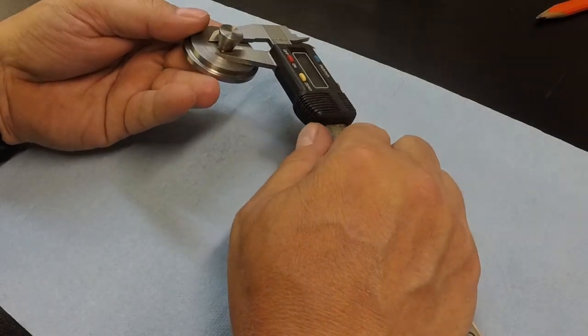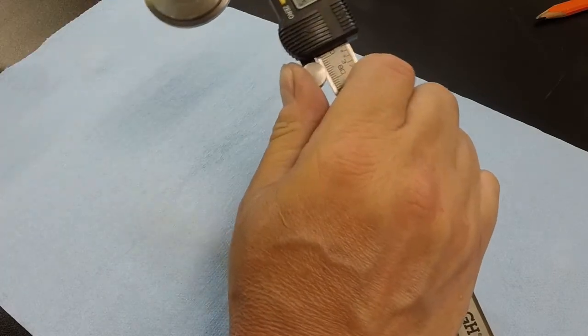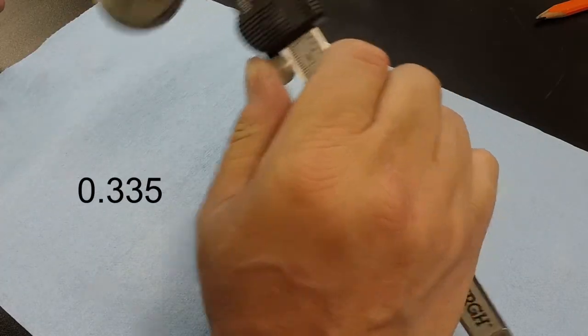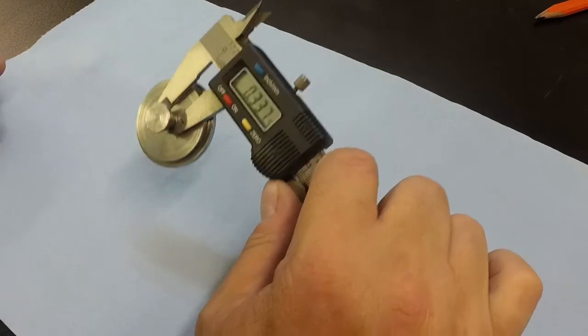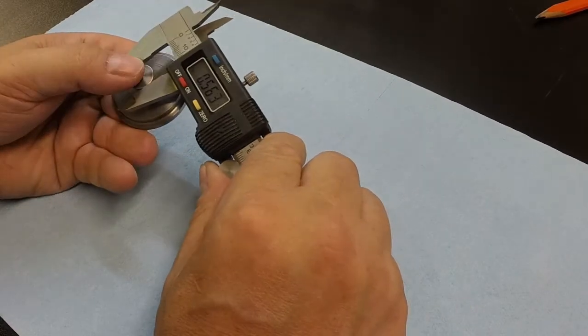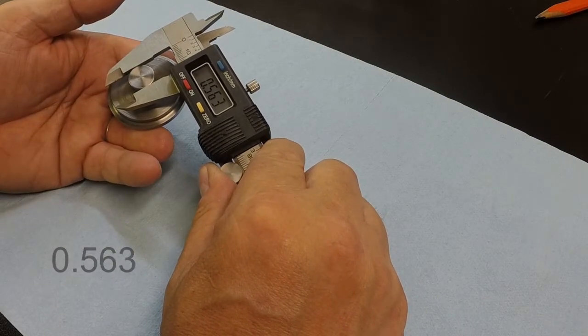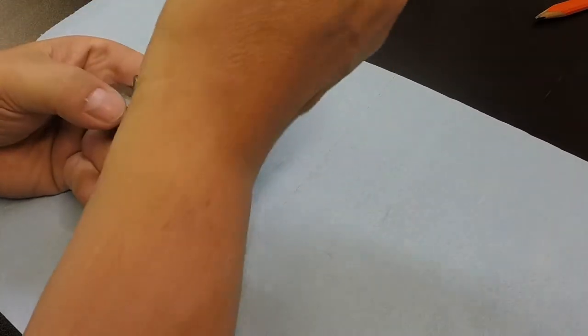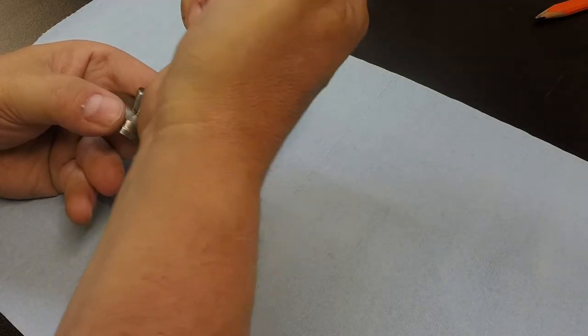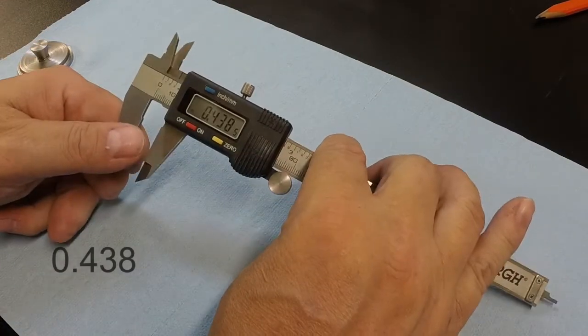Okay, the dovetail, all the way down, the smallest part of the dovetail, 335 thousandths, if you can see that. Okay, the large part of the dovetail, the top part, 563, okay, and the height of the dovetail is 438.